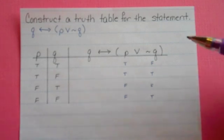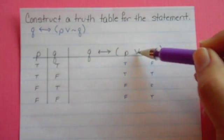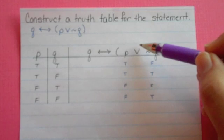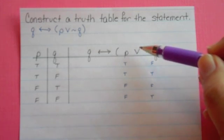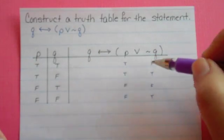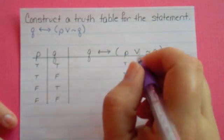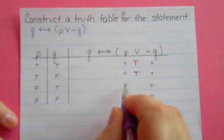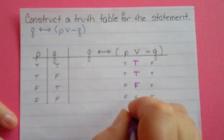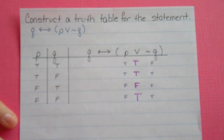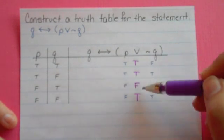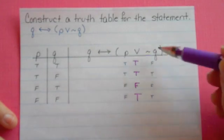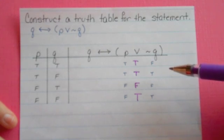My next step inside my parentheses is to OR these two statements. Remember the rule for OR: if there's a true, it's true. So in this first line there's a true, there's a true — true. No true, so false. And here's a true. So what I just wrote — true, true, false, true — is the solution to what's in my parentheses.